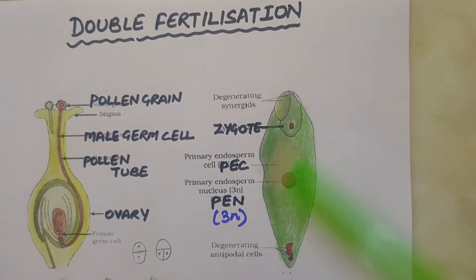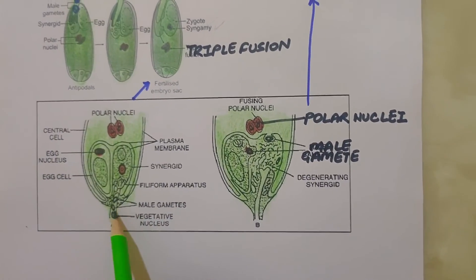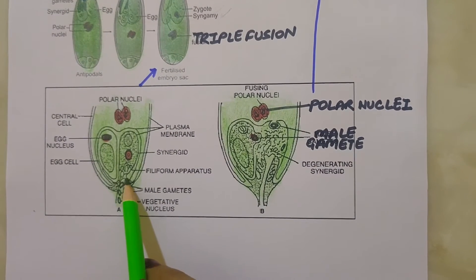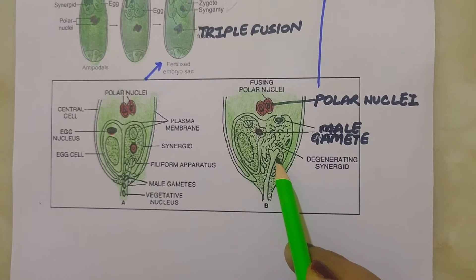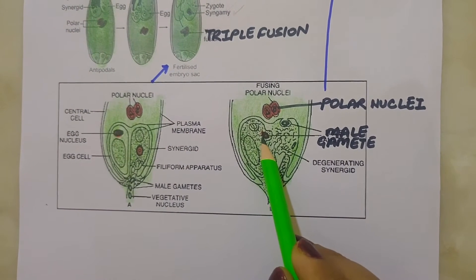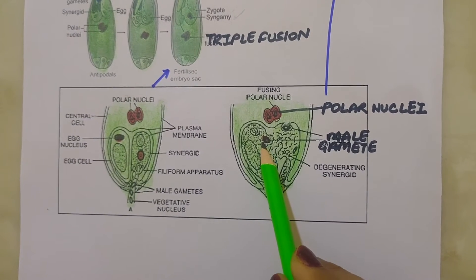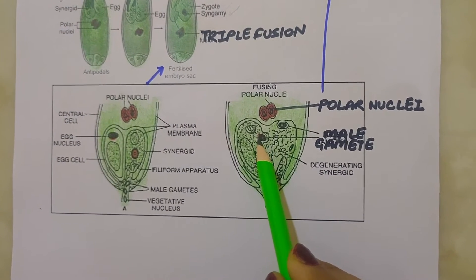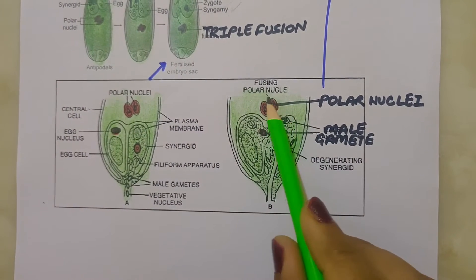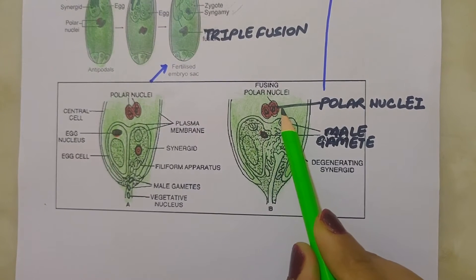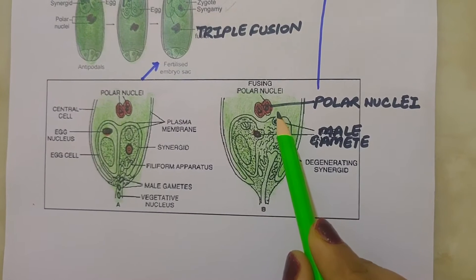Next topic is double fertilization. After entering one of the synergids, the pollen tube releases two male gametes into the cytoplasm of the synergid. One of the male gametes moves towards the egg cell and fuses with its nucleus, thus completing syngamy, and this results in the formation of a diploid cell, i.e., the zygote. The other male gamete moves towards the two polar nuclei located in the central cell and fuses with them to produce a triploid primary endosperm nucleus.